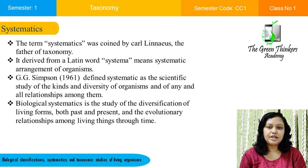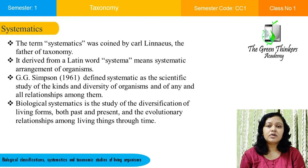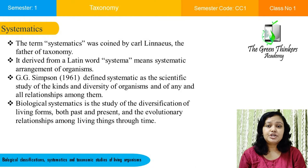In 1735, Linnaeus first used the term systematics in his book Systema Naturae. In biological science, systematics deals with the variation within the taxa as well as the determination of various unique and similar characteristics of organisms. It provides naming and identification of organisms, investigates evolutionary relationships, and also considers the environmental adaptation of organisms.